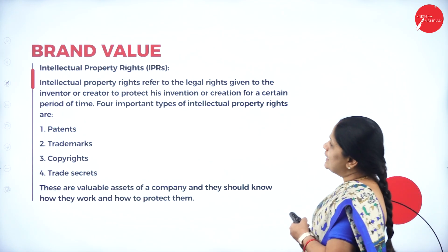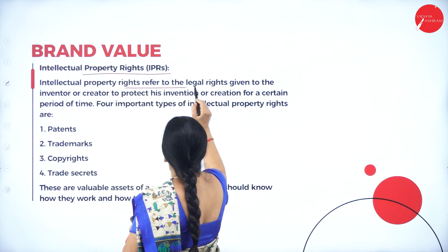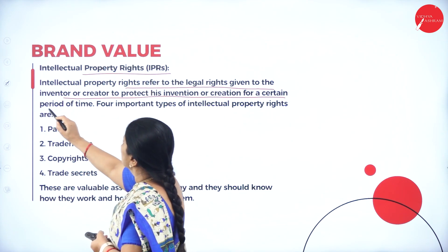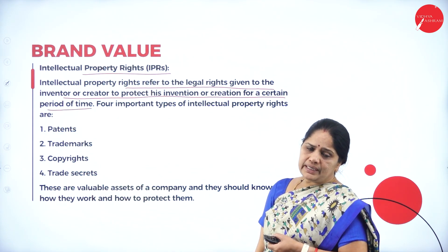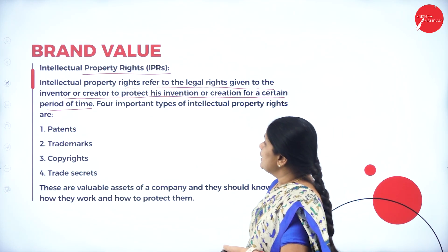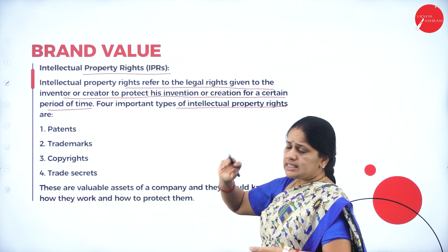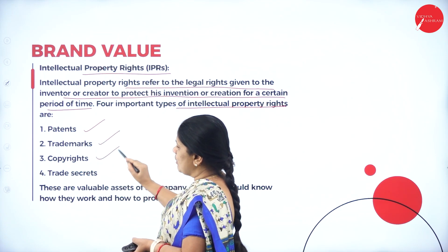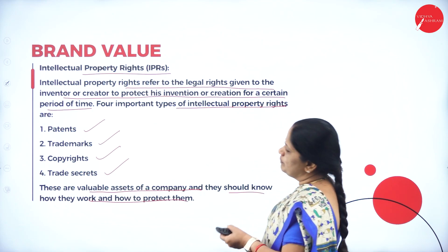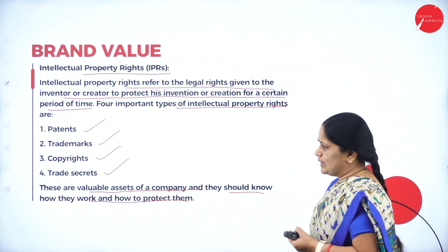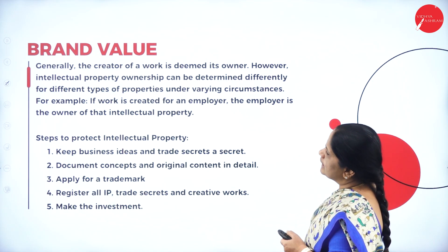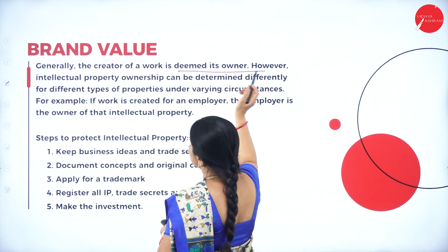Intellectual property rights refers to the legal rights given to the inventor or creator to protect their invention or creation for a certain period of time. Four important types of intellectual property rights are: patents, trademarks, copyrights, and trade secrets. These are valuable assets of a company, and companies should know how they work and how to protect them.